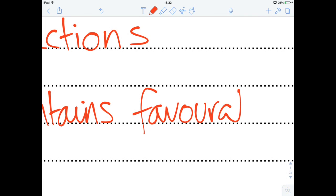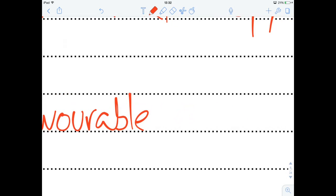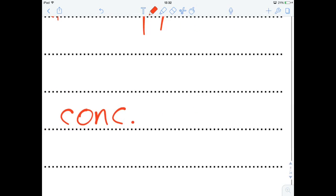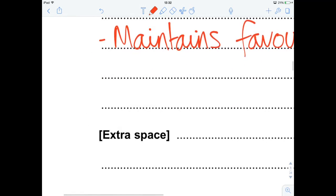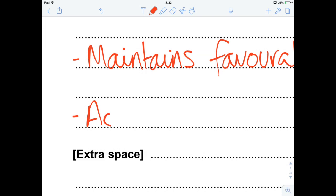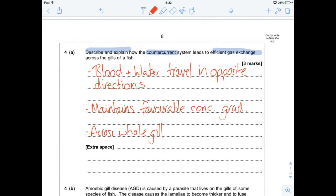Maintains a favourable concentration gradient, and it's got to be across the entire gill. So across the whole exchange surface. Nice and easy three marks there. If you need to refresh yourself, check out my video.